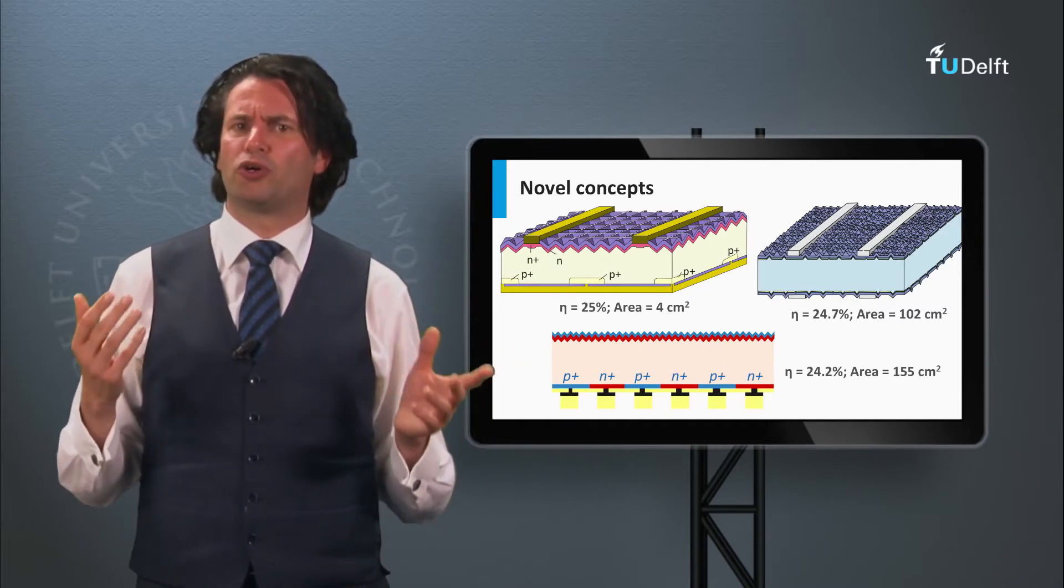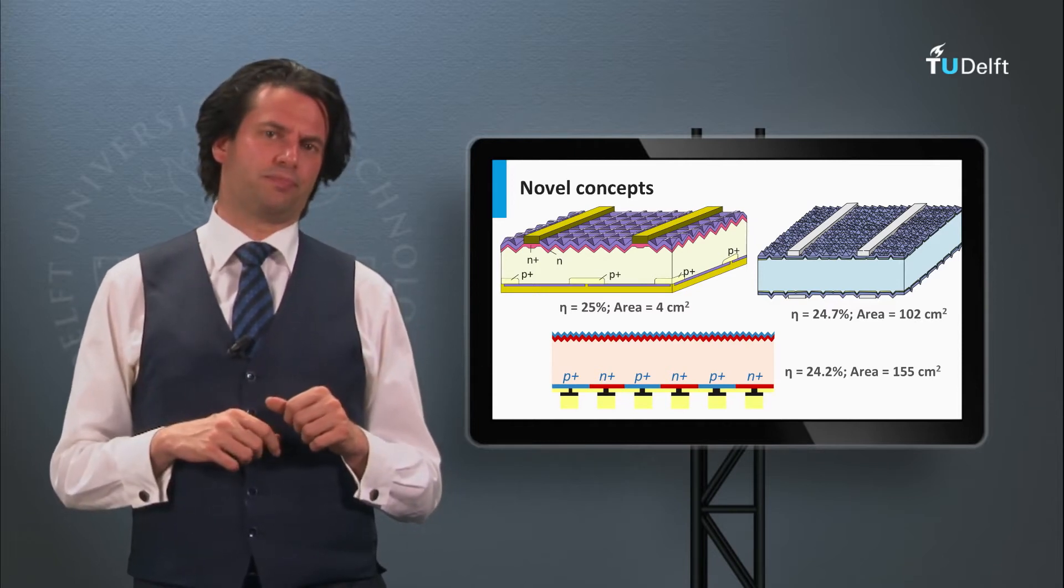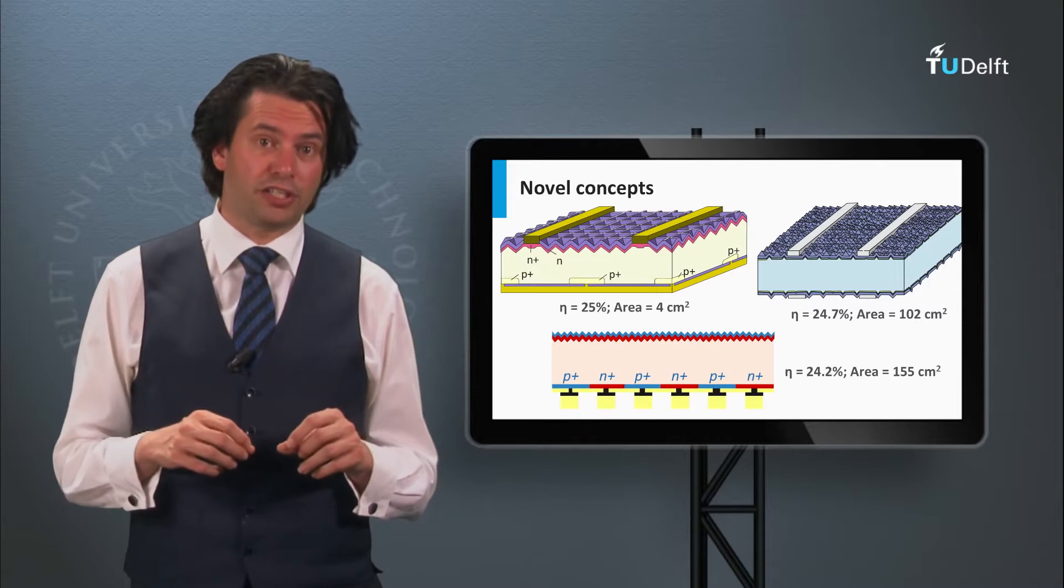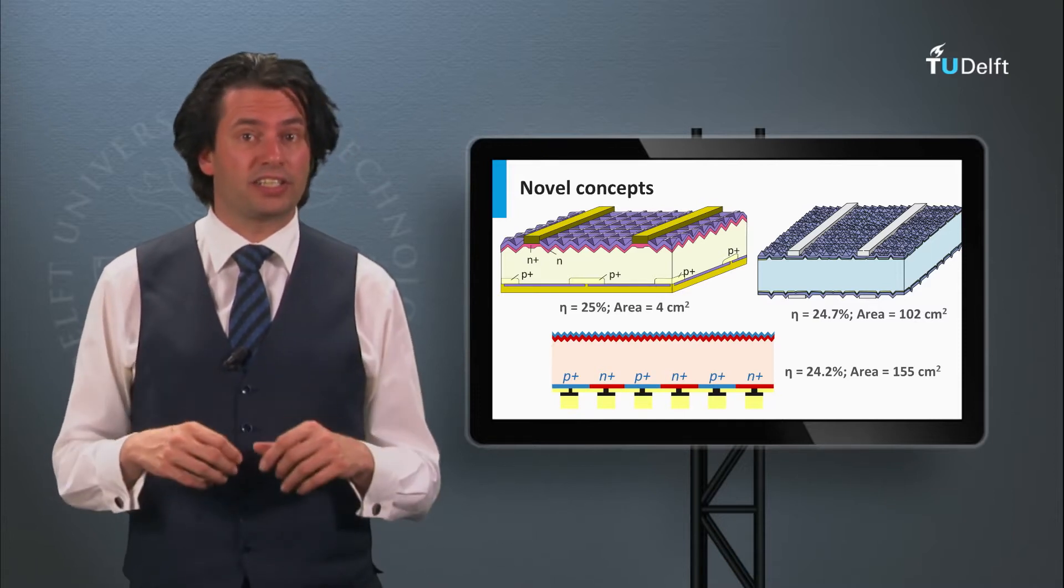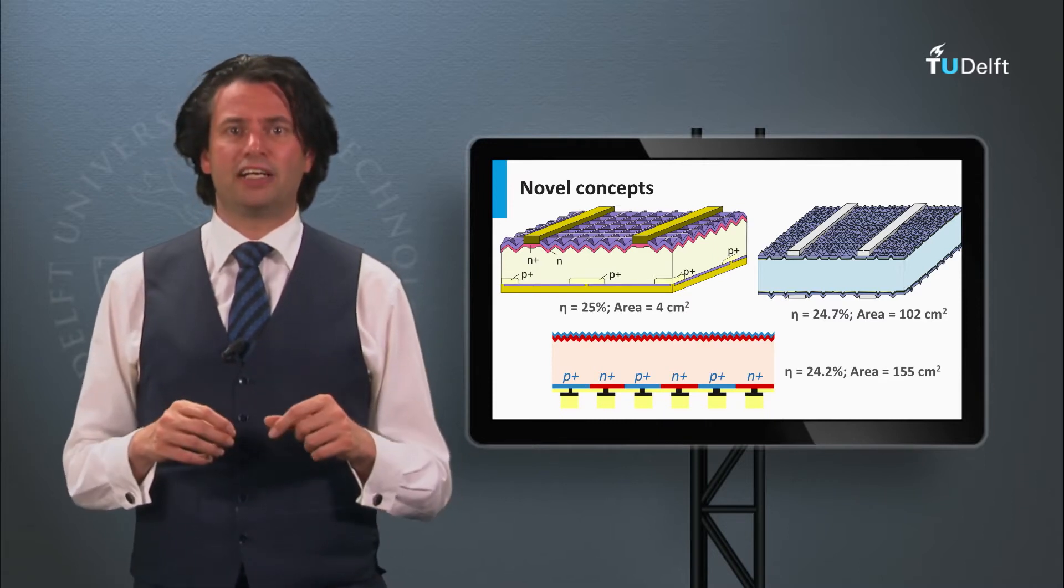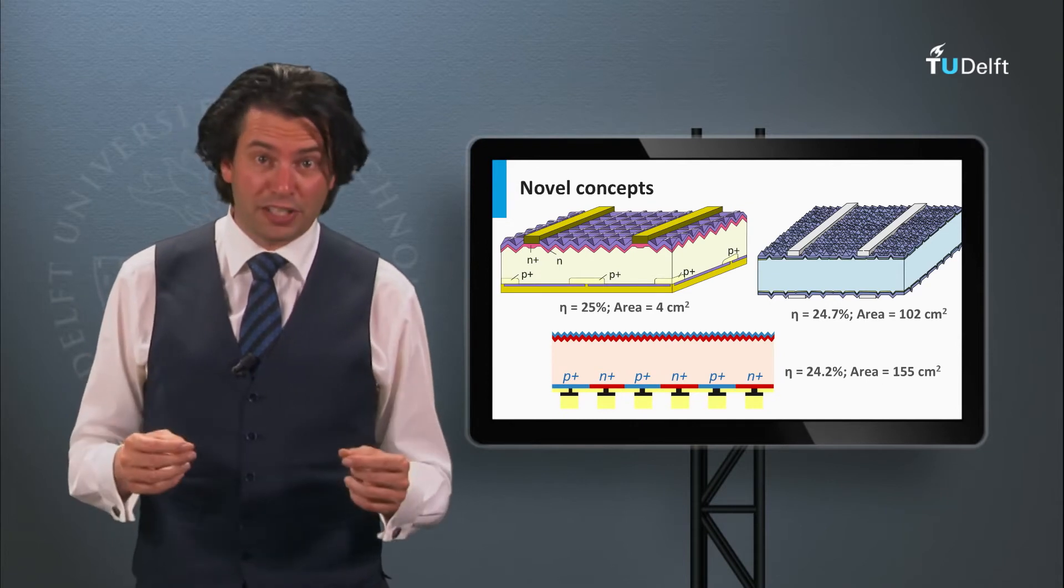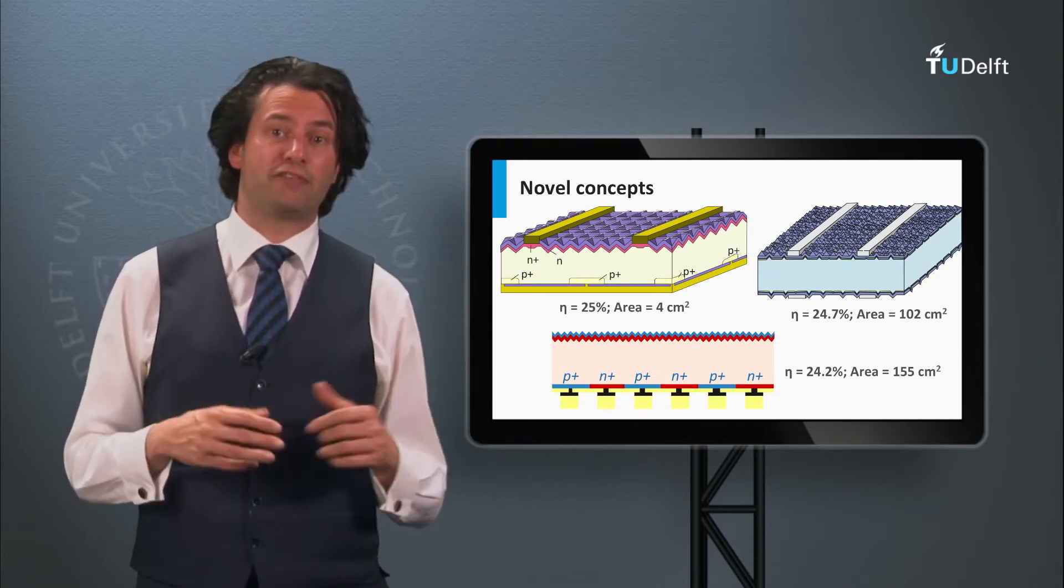However, this was a lab-scale solar cell with an area of 4 square centimeters. The record efficiency for an interdigitated crystalline silicon solar cell has been achieved by SunPower. They achieved an efficiency of 24.2 percent on a wafer size of 155 square centimeters.